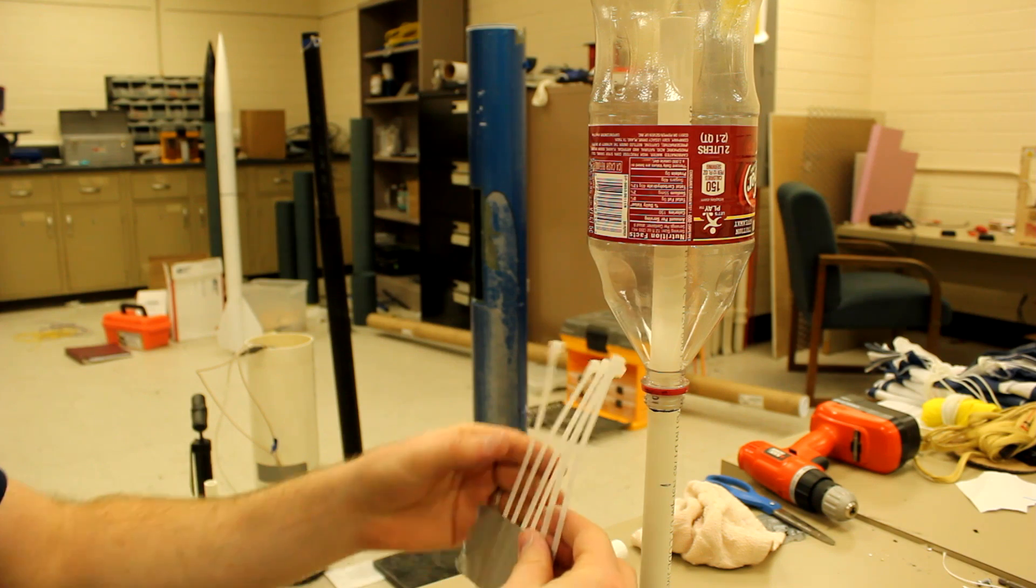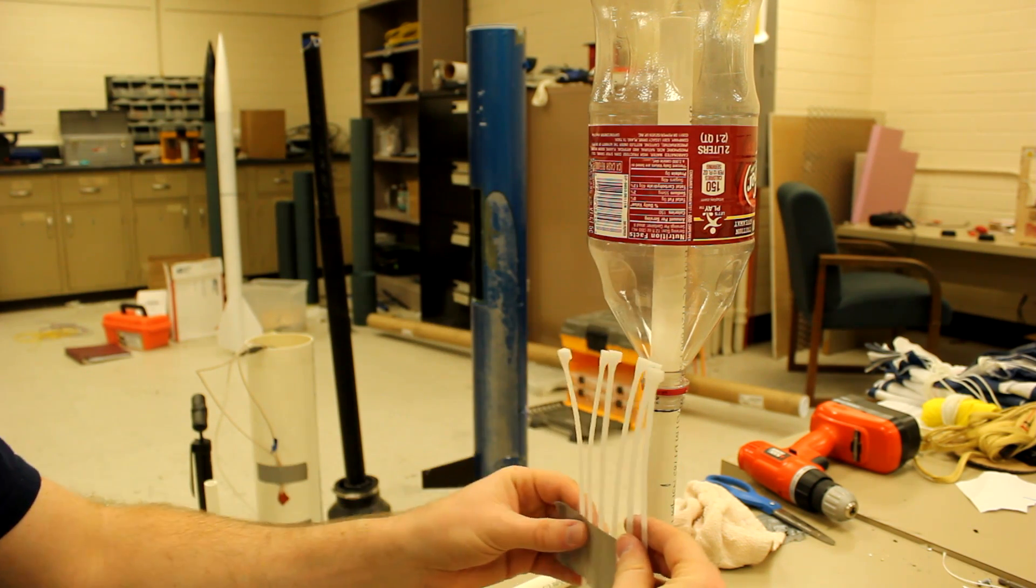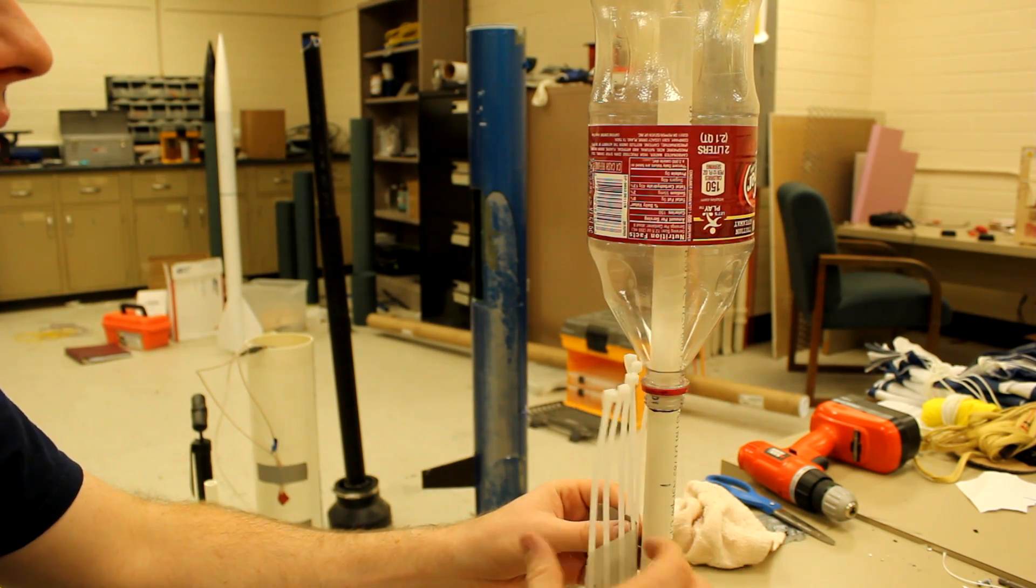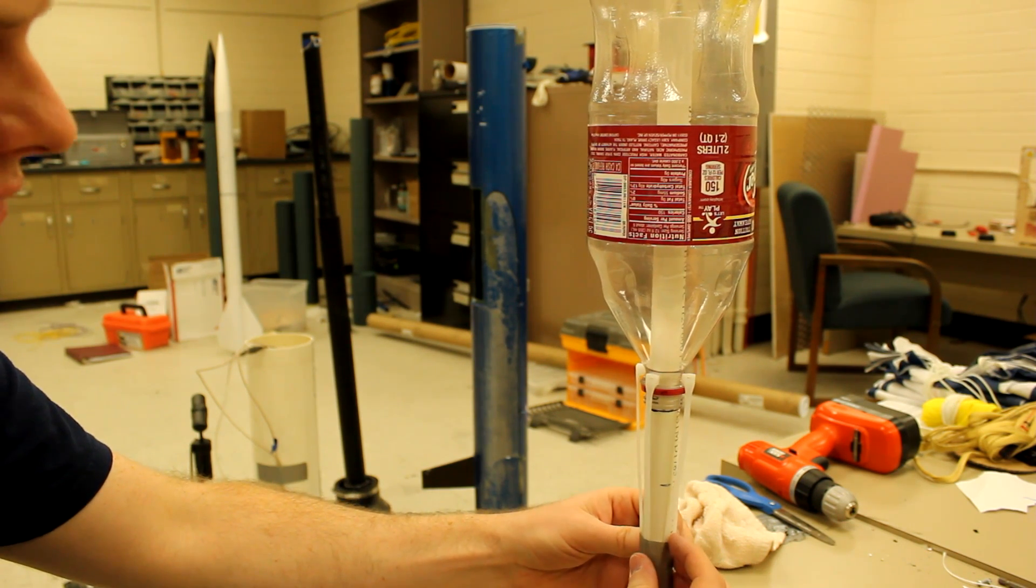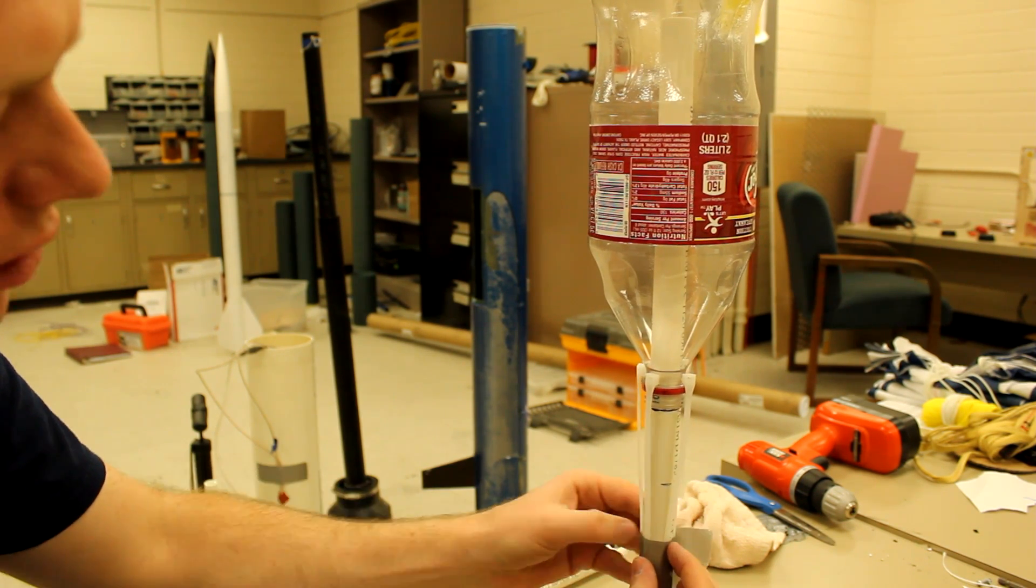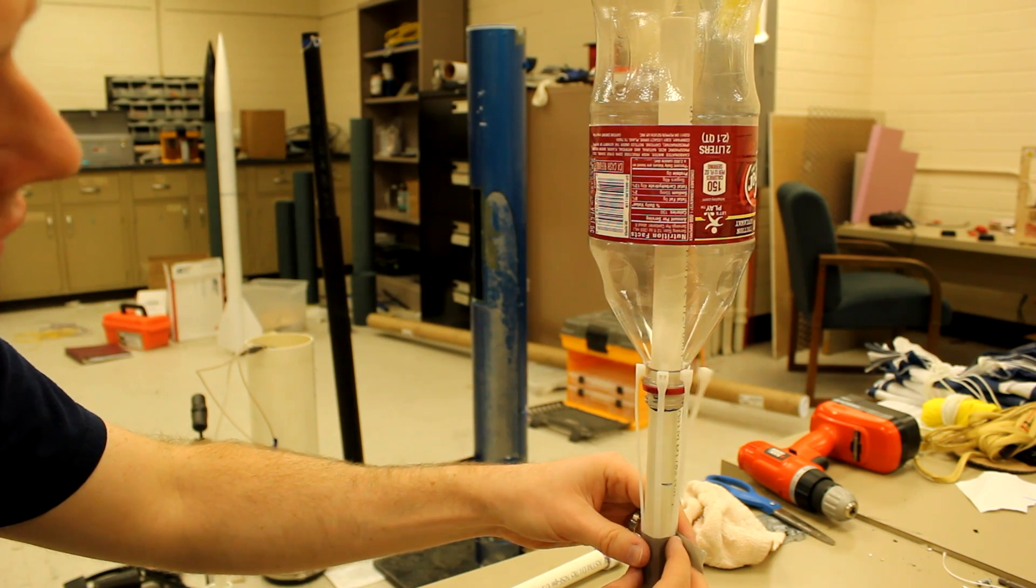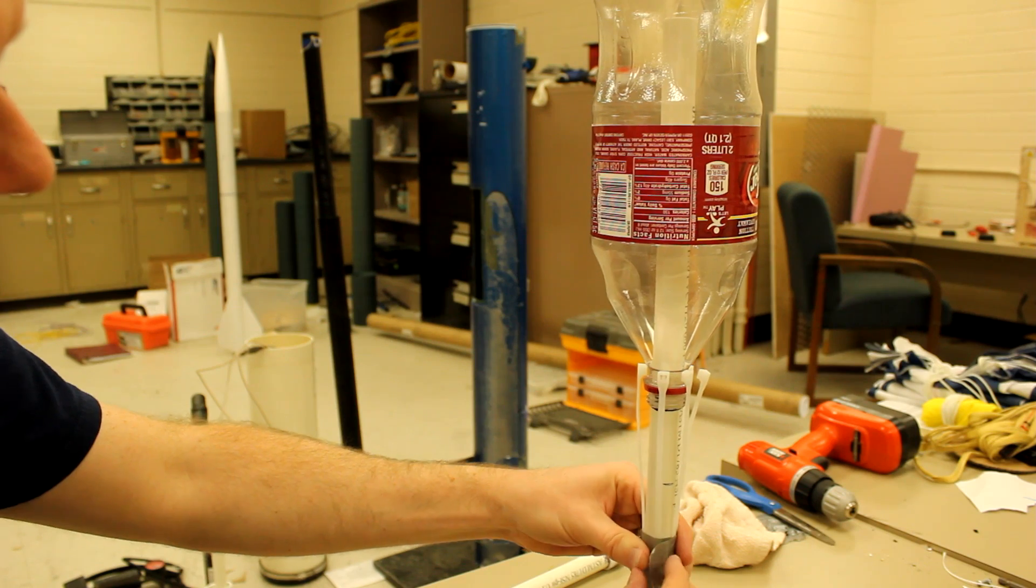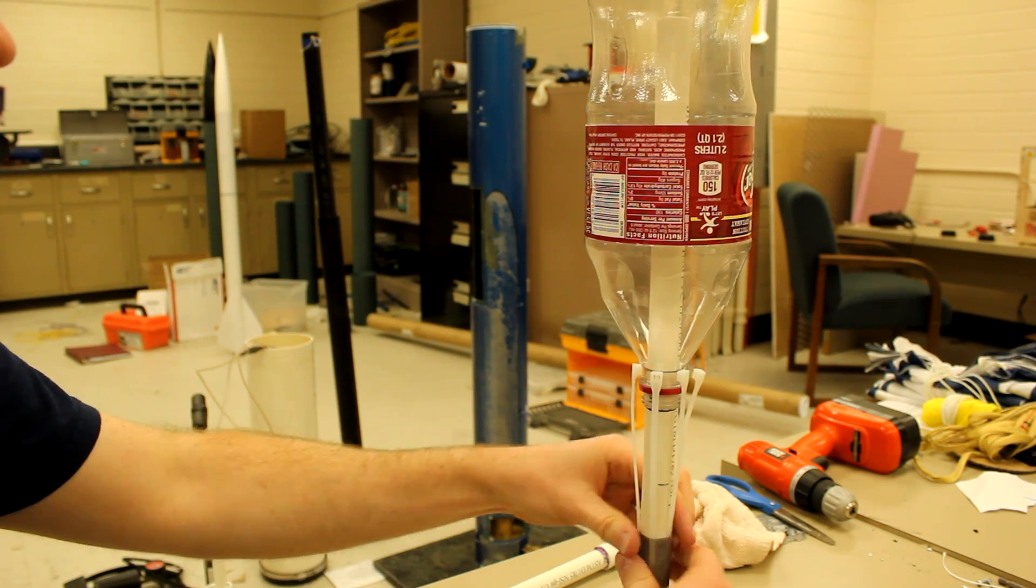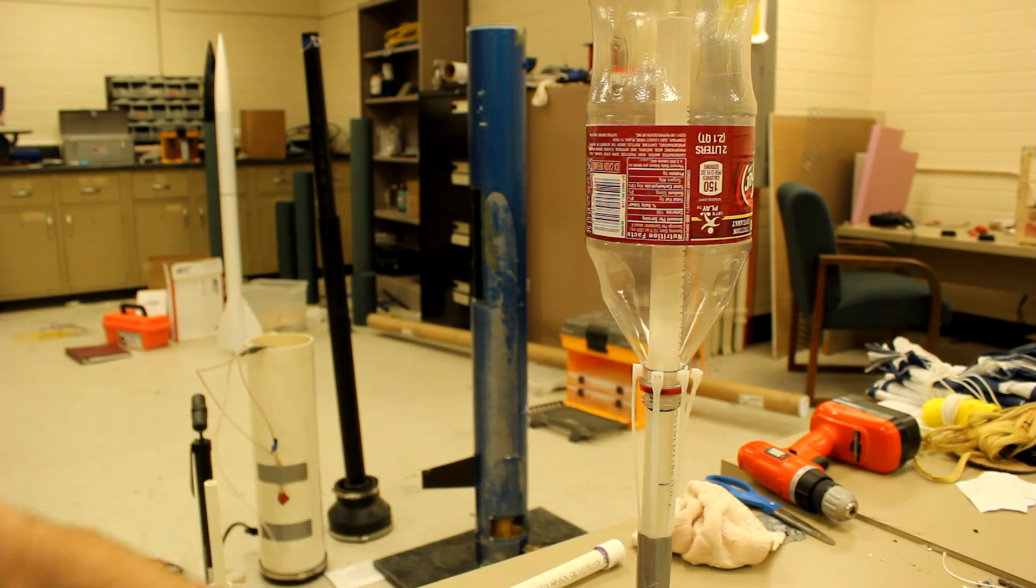You'll now take your zip ties, which you've lined up with the ruler, on your duct tape. And we're going to wrap those around. And we're going to slide those down until they just sit right on that lip, that flange on the bottle. And then once you get it to where it sits just right, you'll wrap your duct tape around and stick it to the launch rail right there.